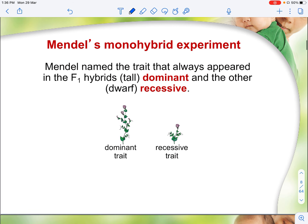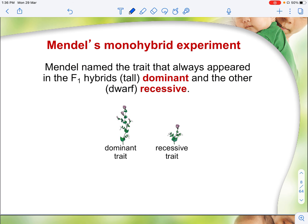From this experiment, he realized that because short plants still appeared in the F2 generation, the allele for tall height is actually more dominant than the allele for dwarf. Therefore the dominant trait is tall and the recessive trait is dwarf.